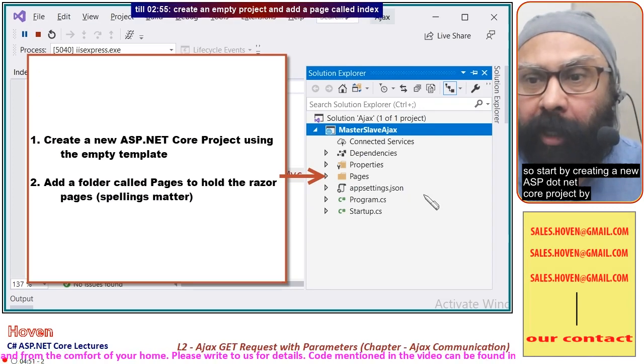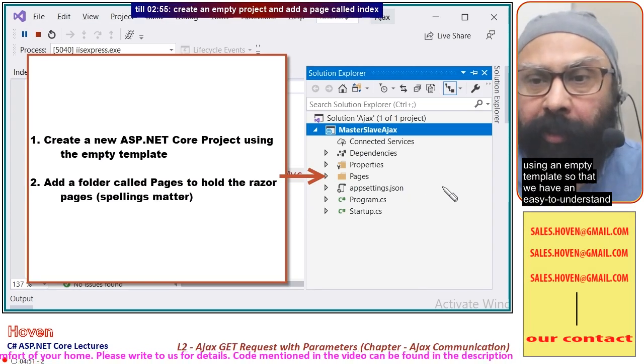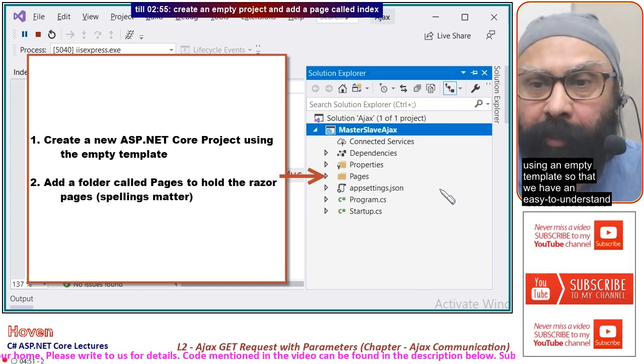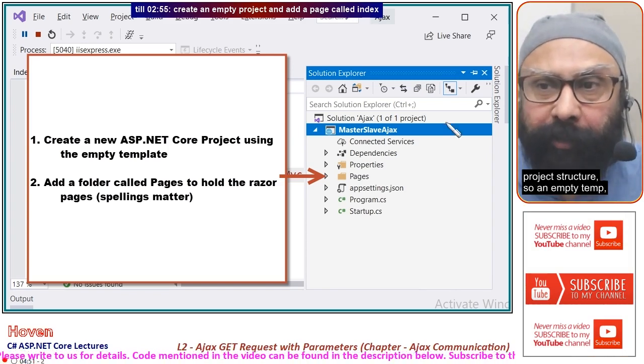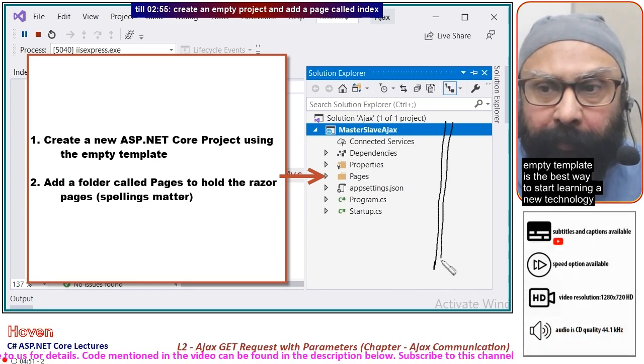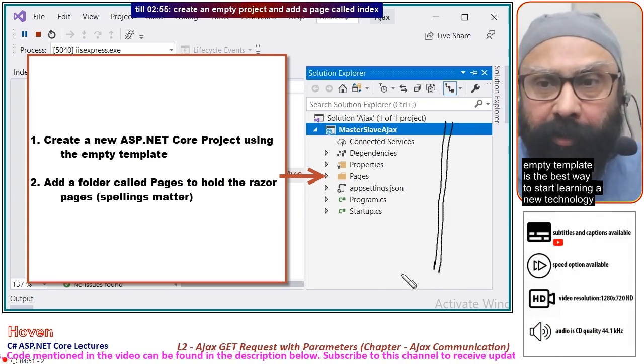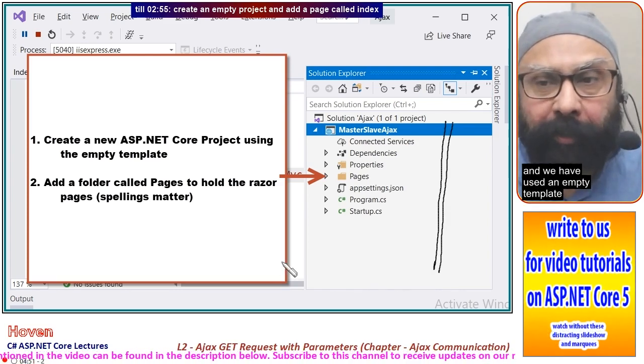Start by creating a new ASP.NET Core project using an empty template so that we have an easy-to-understand project structure. An empty template is the best way to start learning a new technology.